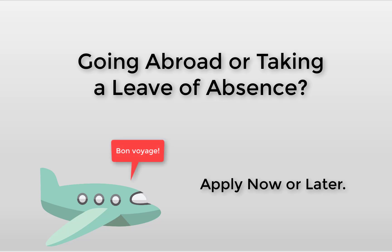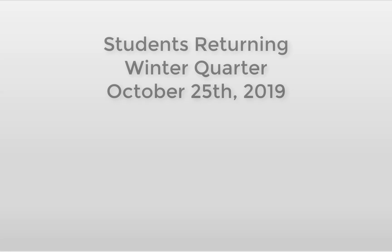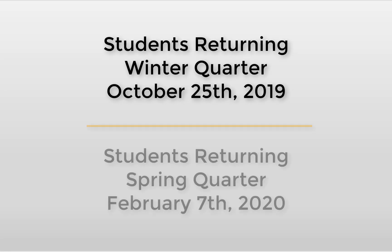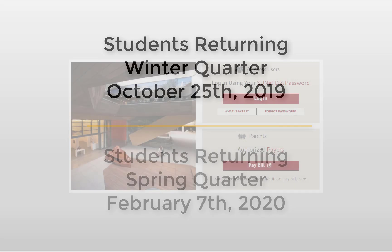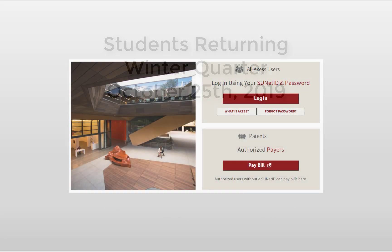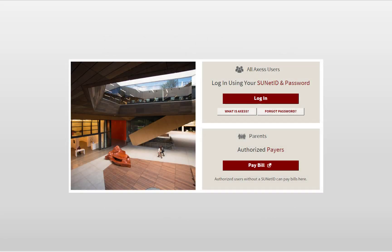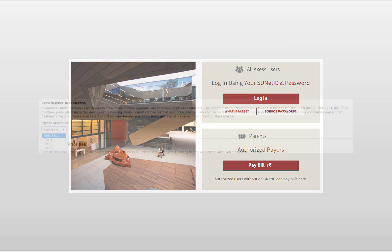The application deadline for students who will be gone autumn quarter but returning winter quarter is in October. The application deadline for students who will be gone both autumn and winter quarters but returning for spring quarter is in February. You participate in the draw by logging on to the Housing and Dining section of Axess and filling out a housing application.